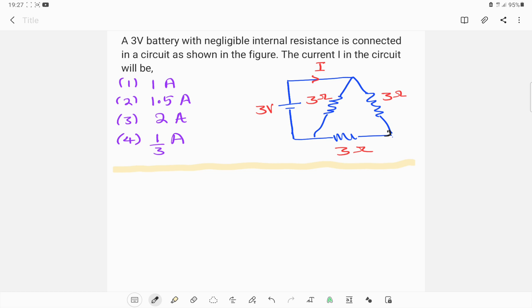A 3 volt battery with negligible internal resistance is connected in a circuit as shown in the figure. The current I in the circuit will be. So first of all, you need to find out what are the equivalent resistance of this circuit.